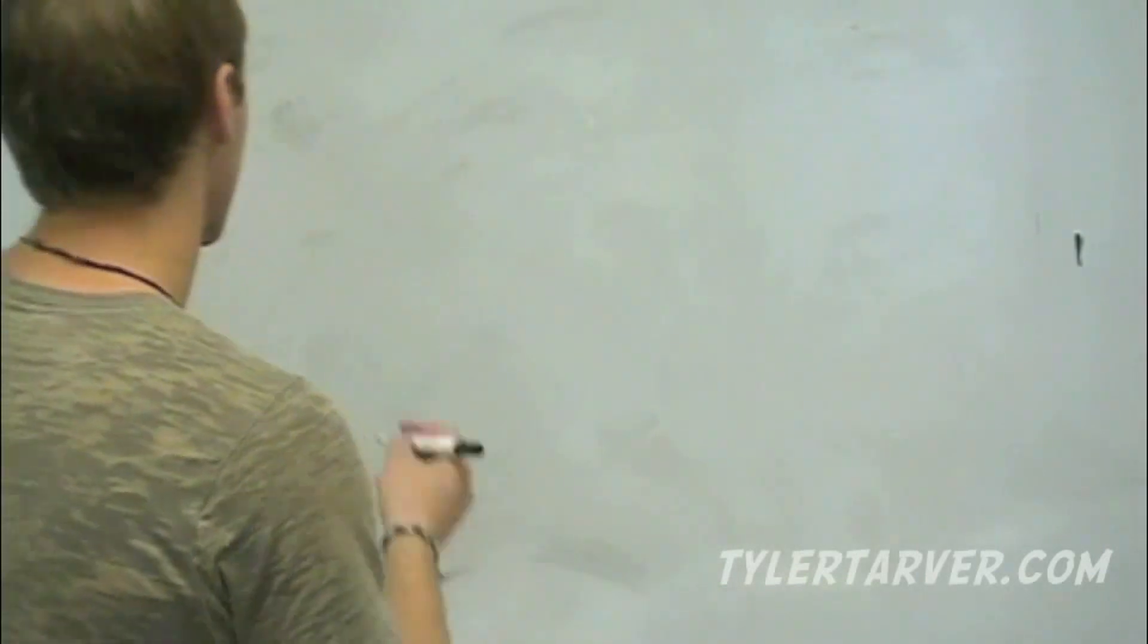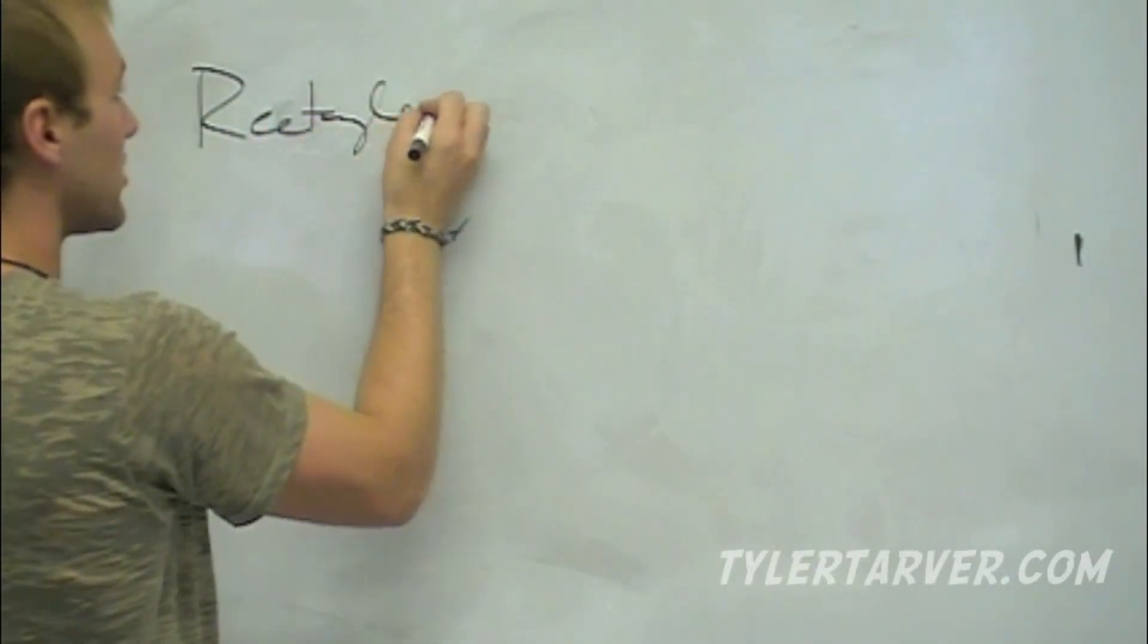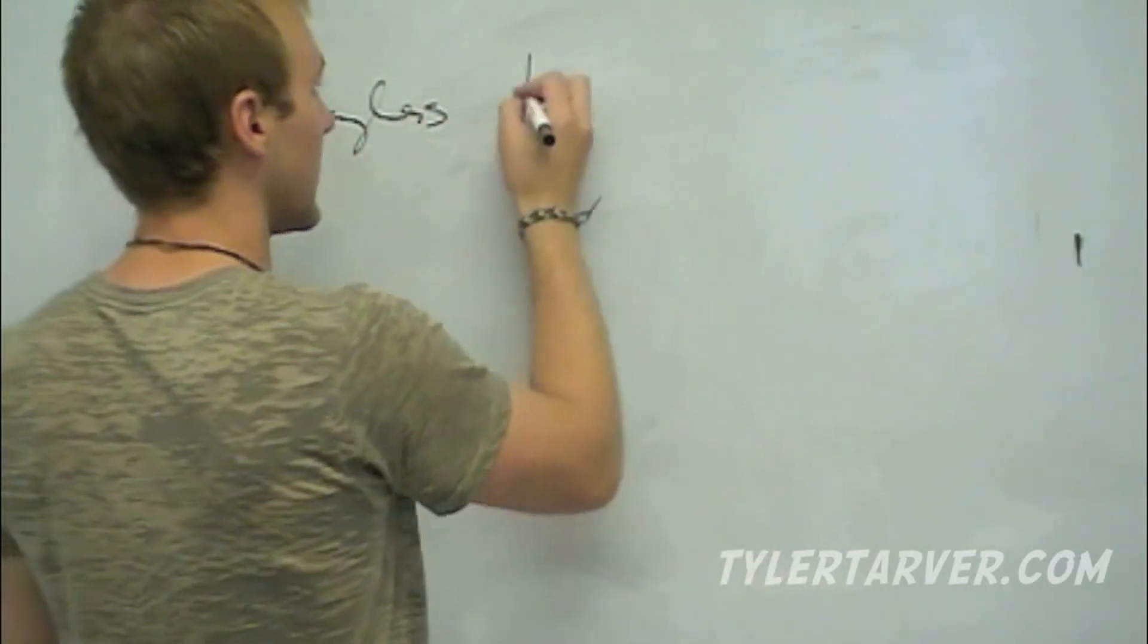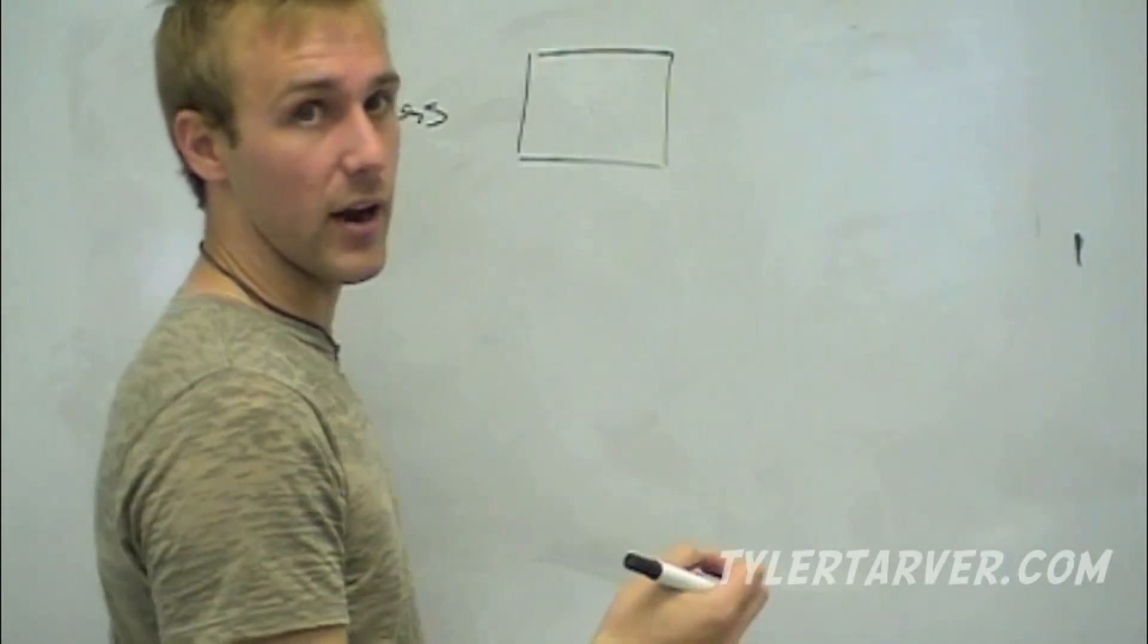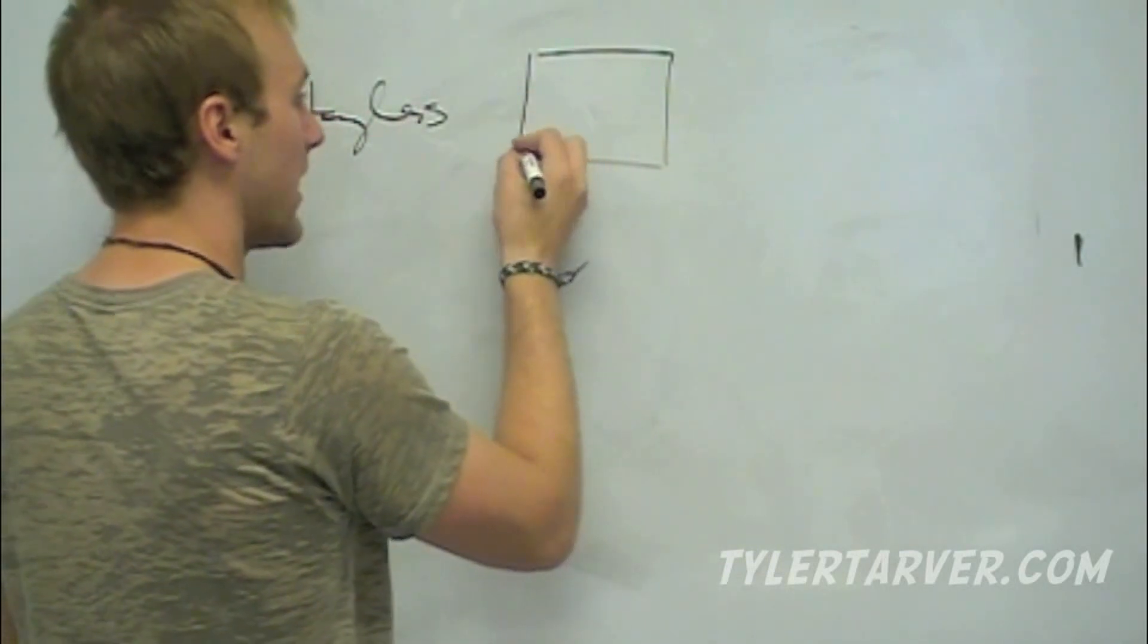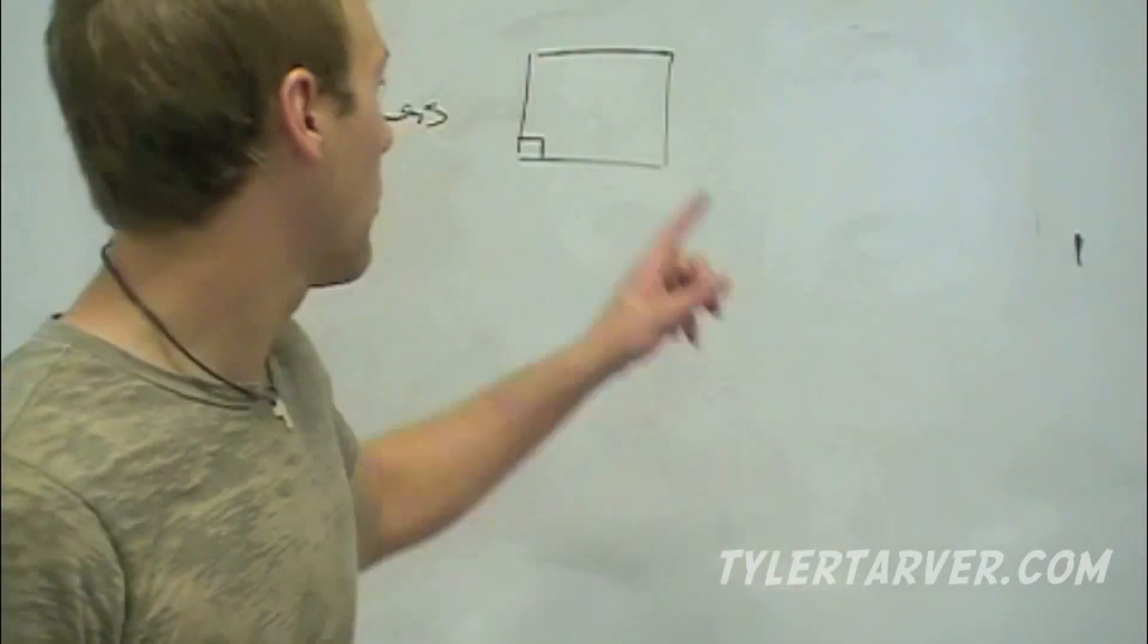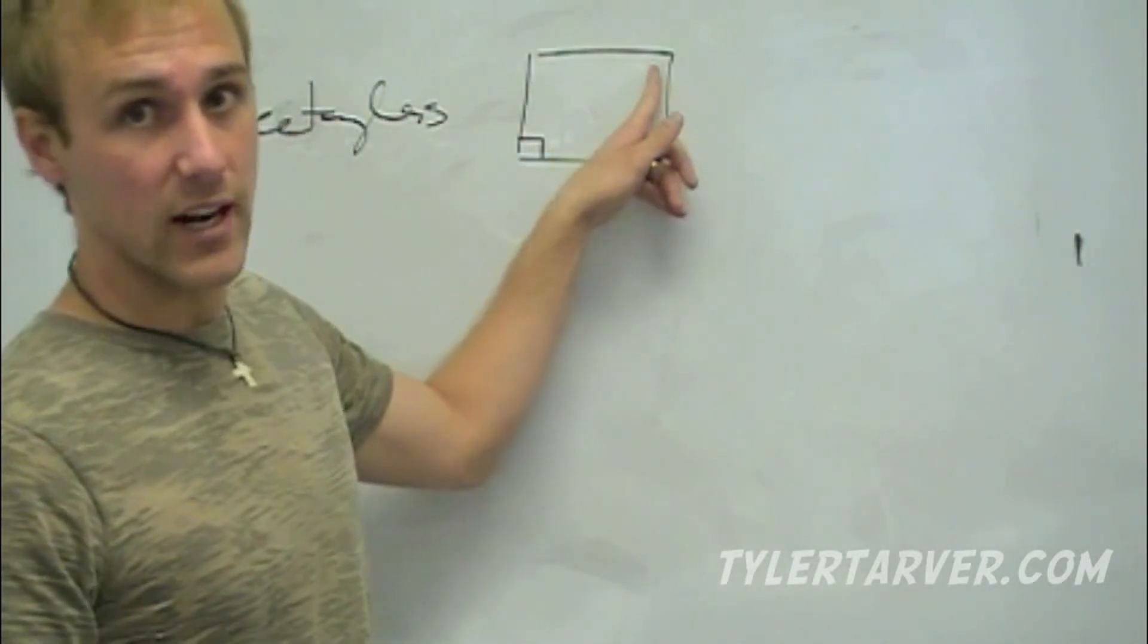First one, we'll start with rectangles. It's pretty much the properties you learned but switched around. This one is if you know this is a parallelogram, which means the opposite sides are parallel, all that. If it's a parallelogram and it has one right angle, it's a rectangle. If that one right angle is 90 degrees, we know the opposite one is 90 degrees.